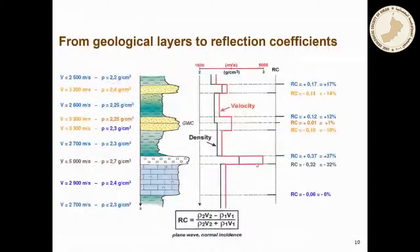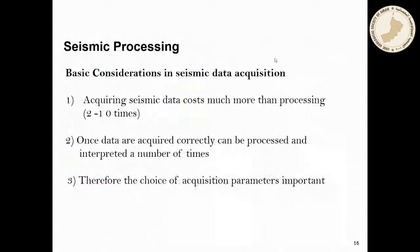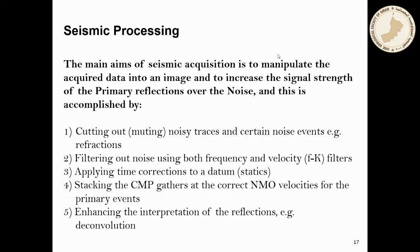We discussed reflection coefficient — the ability of a boundary between two layers to reflect seismic data. The more contrast there is between two layers, the more likely we can image that boundary in good detail. That's why in south Oman the Haima and Haushi sequence is not very well imaged, because the acoustic impedance contrast between layers is not as good as in north Oman, where we have a big contrast between layers. We also spoke about seismic acquisition on land and offshore, and briefly about seismic processing.